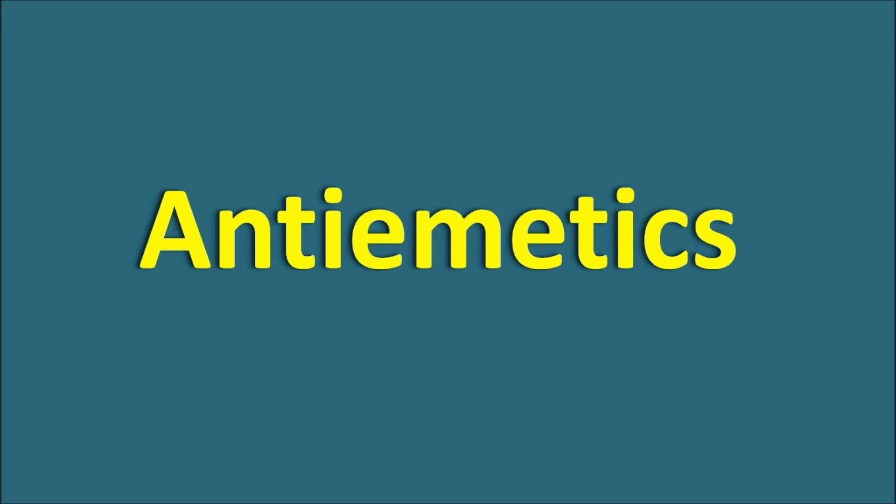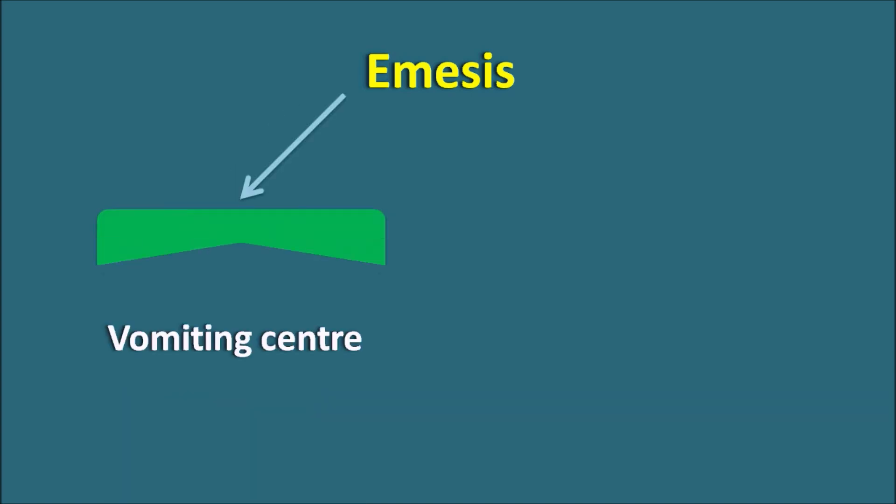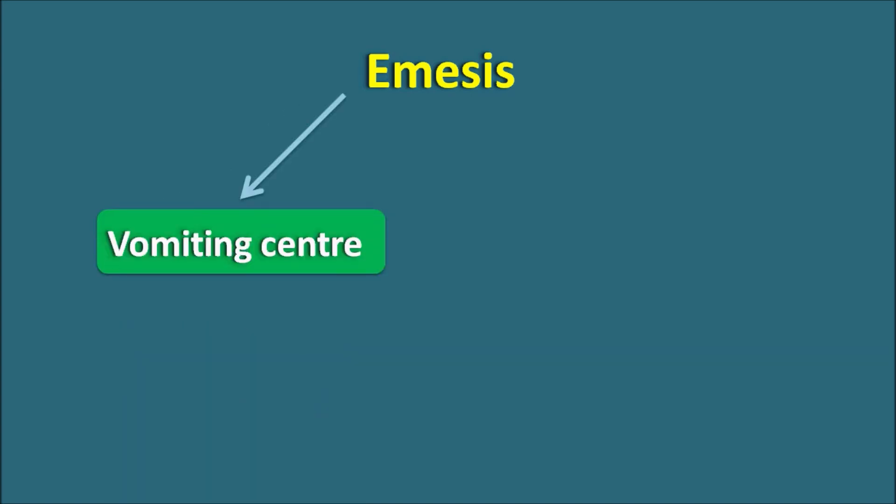Today in this video, let us discuss about the anti-emetics. Emesis is one of the physiological responses which is going to be stimulated by two important centers within the CNS. The first one is the vomiting center, which is going to control all types of stimuli that result in nausea and vomiting.